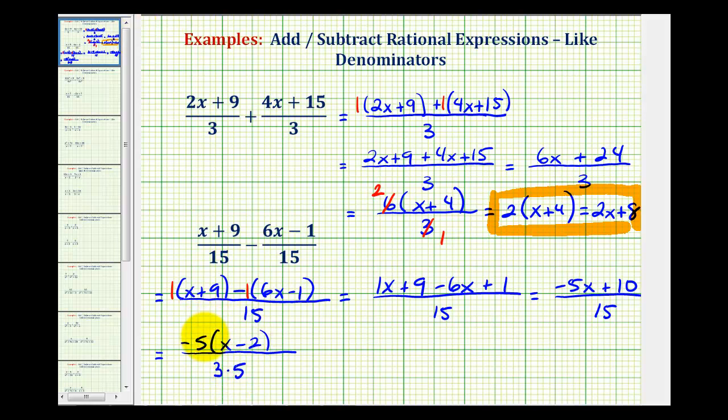Let's go ahead and write fifteen as three times five. Notice in this form, we have a common factor of five here and here. That simplifies to one.